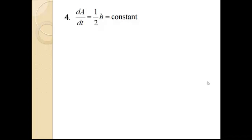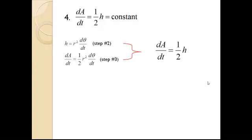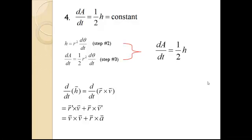In the final step of proving the second law, we need to show that dA/dt equals one-half h, which is a constant. We can combine the equations previously derived from steps 2 and 3 to show that dA/dt does indeed equal one-half h. Now, we still need to show that h is a constant. To do this, we can show that its derivative equals zero. If we recall from step 1, vector h is a cross product of vectors r and v. Using product rule, we can express this as r' cross v plus r cross v', which simply equals v cross v plus r cross a. We know that the cross product of a vector and itself gives us zero, and we also know that vectors r and a are parallel to each other. And thus, the derivative of vector h is zero. Therefore, h is a constant, which proves Kepler's second law.